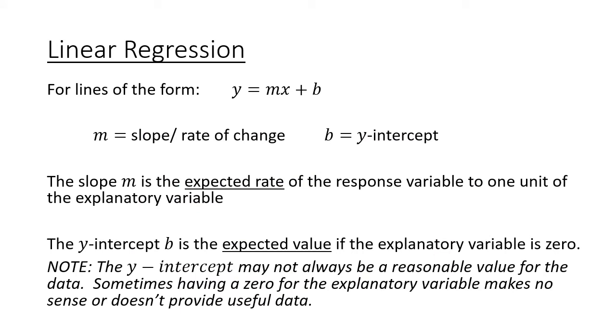Now for the linear regression, when we found that linear model in here we use technology. It all goes back to our equation of a line, the slope-intercept: y = mx + b, where m is your slope or your rate of change and b is your y-intercept. The slope, which is your rate of change, we call that the expected rate of the response variable to one unit of the explanatory variable. That's how much we would expect things to change—that's a rate of change.